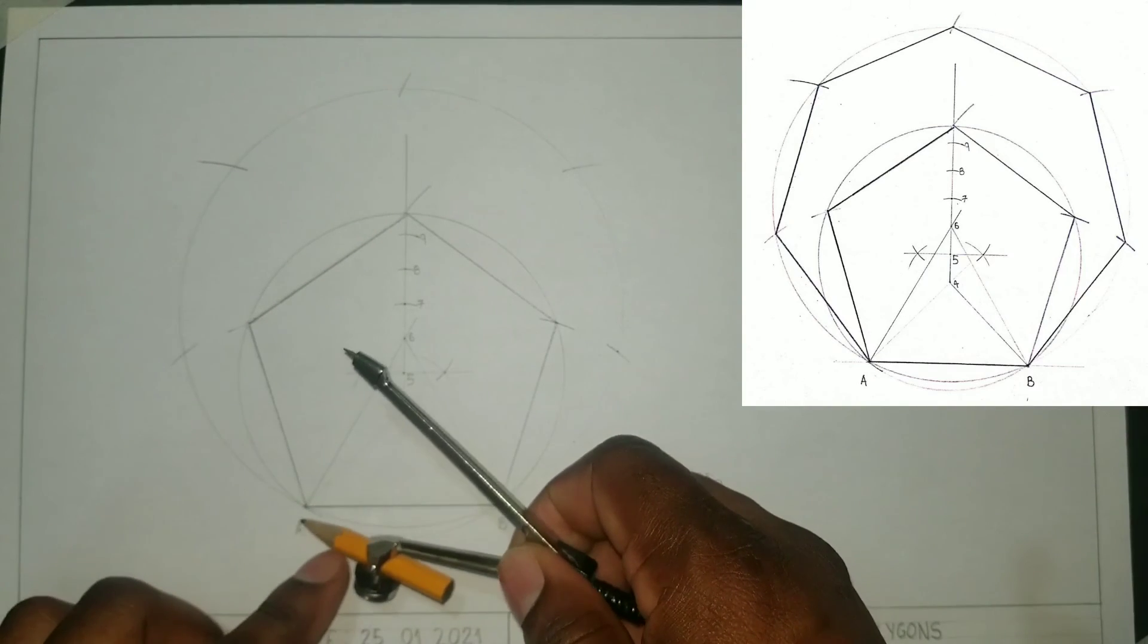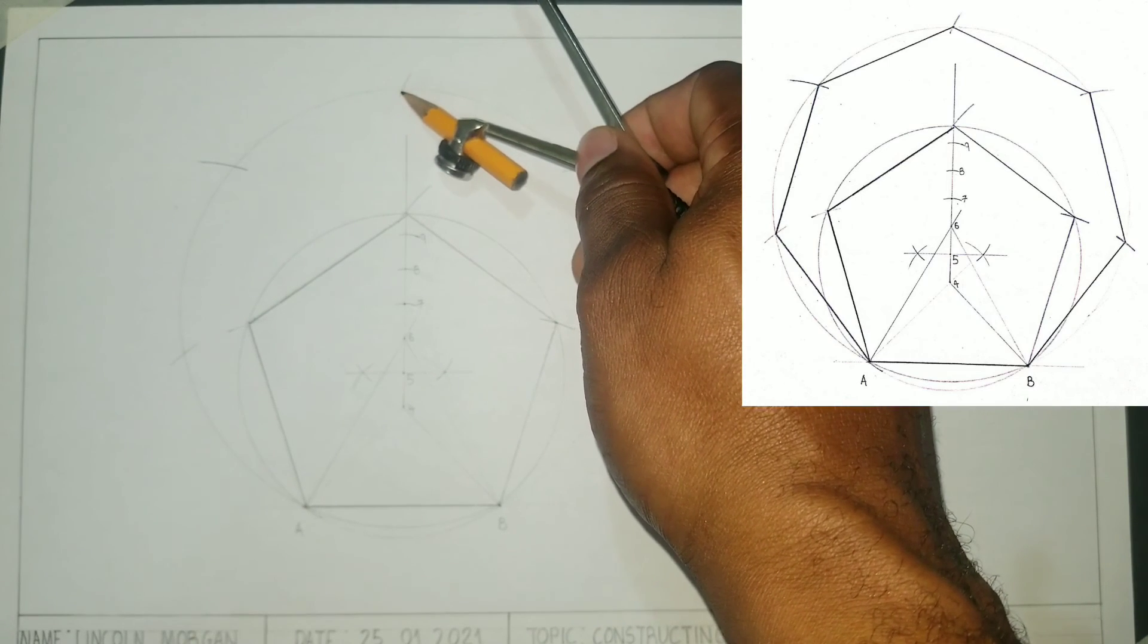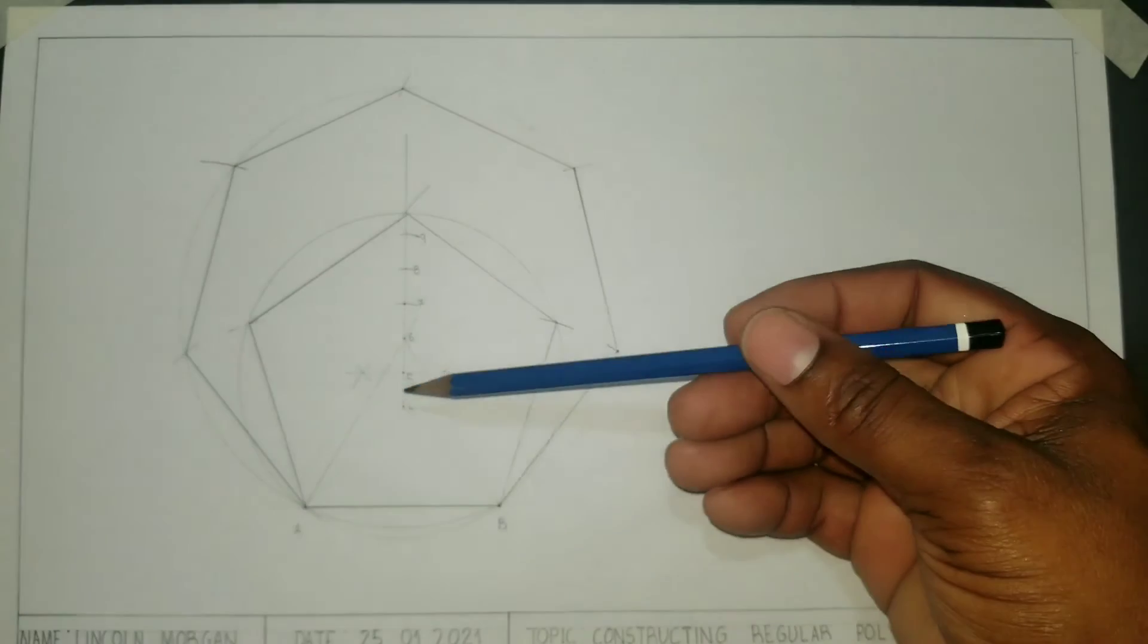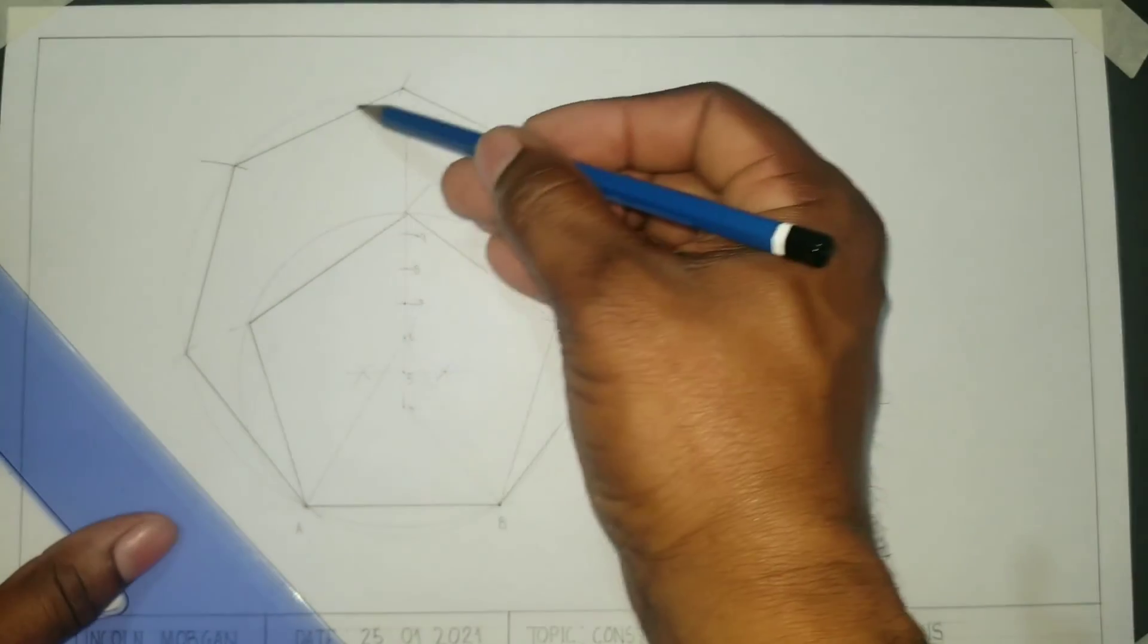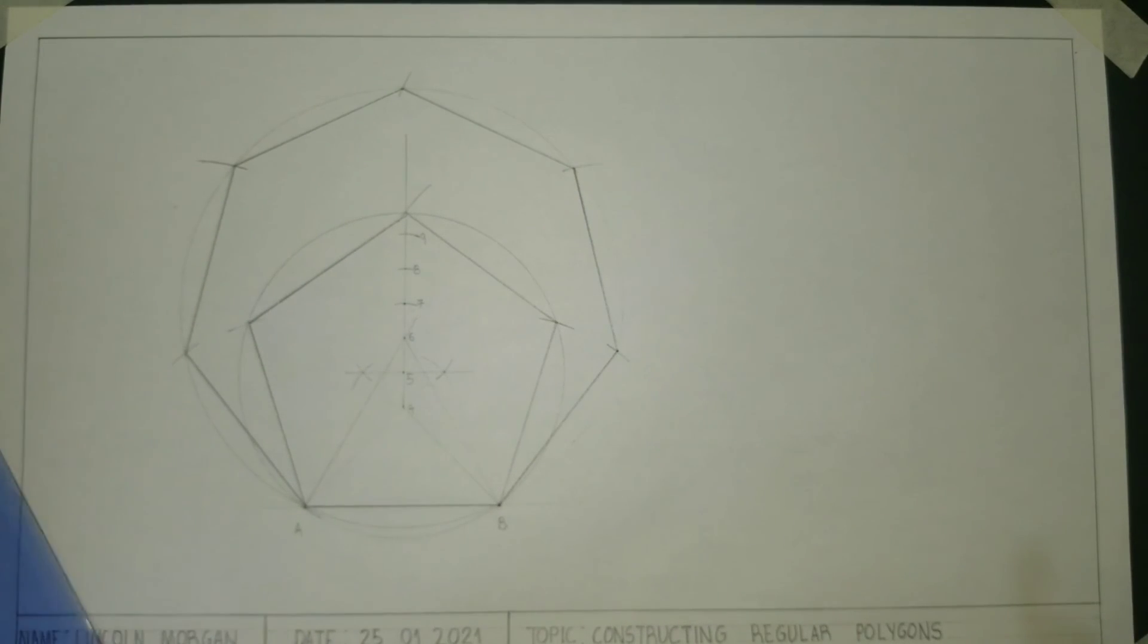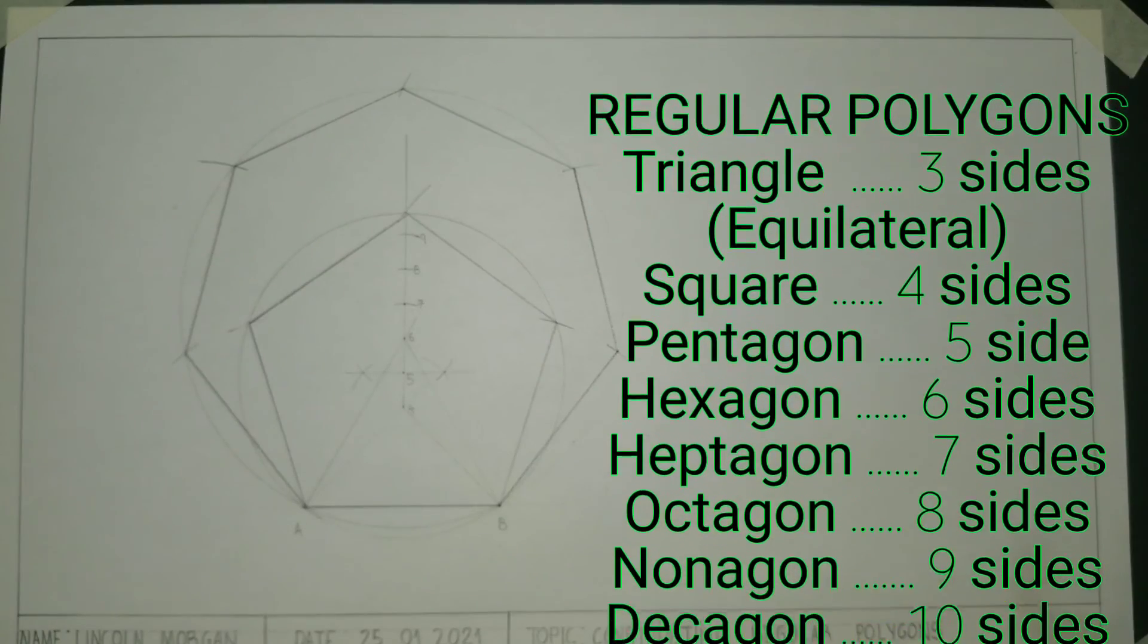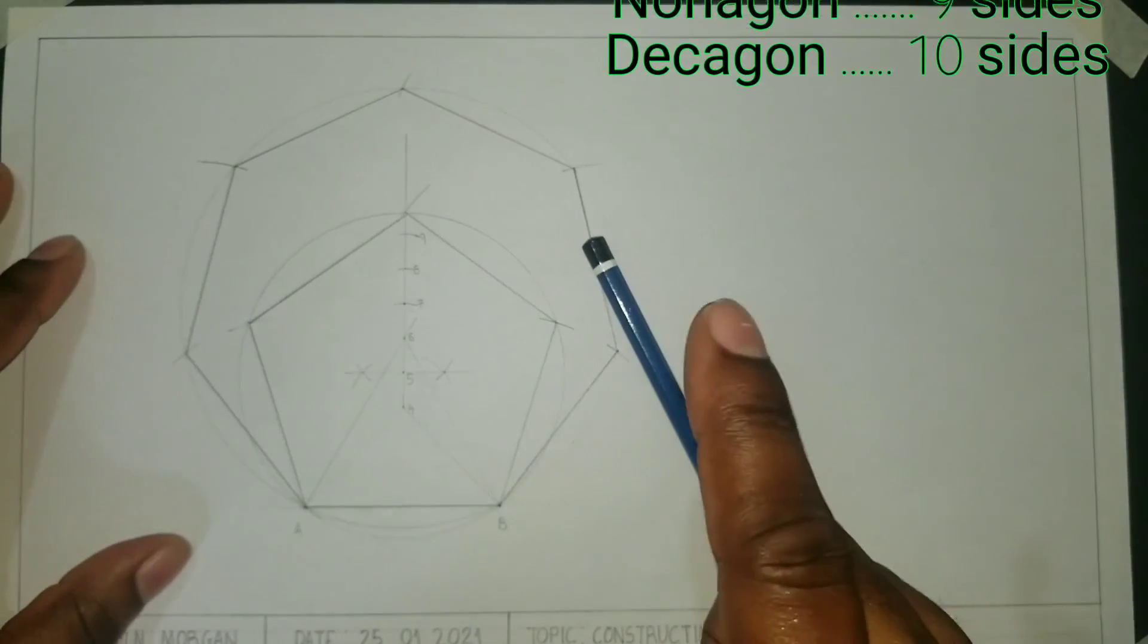We will now draw lines from A to the intersections and from each intersection to its neighboring intersection to complete our heptagon. This method is a general or universal method that is used to construct any regular polygon. Thank you for watching, and have a wonderful day.